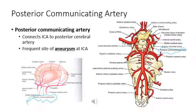Another branch from the internal carotid artery system is the posterior communicating artery, which connects the internal carotid artery to the posterior cerebral artery. These posterior arteries do not come from the internal carotid artery. This site is also a common site for aneurysm.